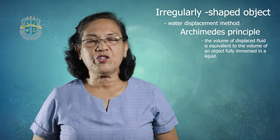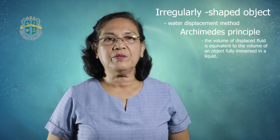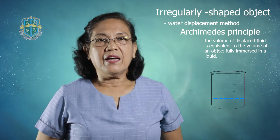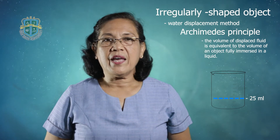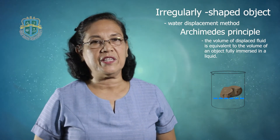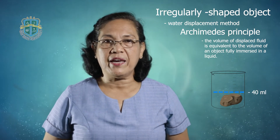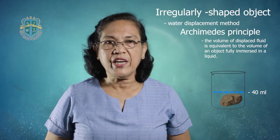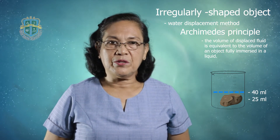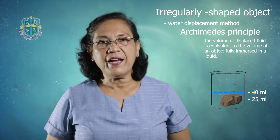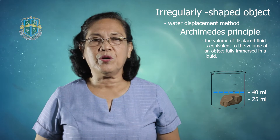Suppose we are going to measure the volume of a stone. We will place the stone into a beaker with water. Initially the beaker contains 25 ml of water, and when we place the stone into the beaker, the water level rises to 40 ml. Looking at the change in liquid level, the initial is 25 ml and the final liquid level is 40 ml, so there is a difference of 15 ml.